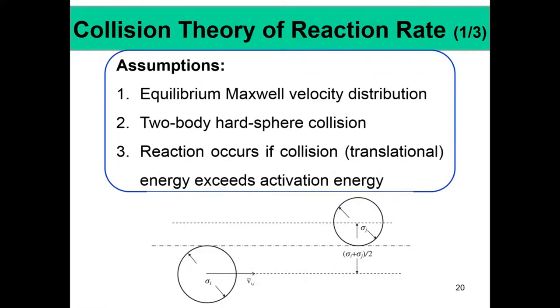For the collision theory of reaction rate, we will make several assumptions. Assumption 1: molecules behave like hard spheres. Assumption 2: they follow the equilibrium Maxwell-Boltzmann velocity distribution. Assumption 3 — a very important assumption: reaction occurs if the collision energy exceeds the activation energy, and by collision energy we are only talking about translational energy. So two molecules, like two billiard balls, collide and if their translational kinetic energy exceeds the activation energy of the reaction, then the reaction happens. The basic inherent assumption is that even though reaction involves rearrangement of electronic structure, we are considering none of that — as long as the collision is hard and exceeds the activation energy, new molecules are formed.